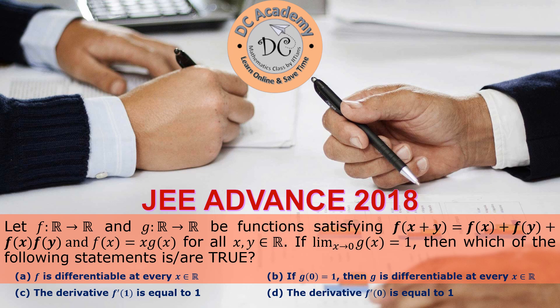Hi! In this video, we are going to solve a particular problem which appeared in the year 2018 JEE Advanced paper. There are four options and this is a multiple-options-correct problem. We have two functions f and g related by three relations, and we need to test which options are correct.